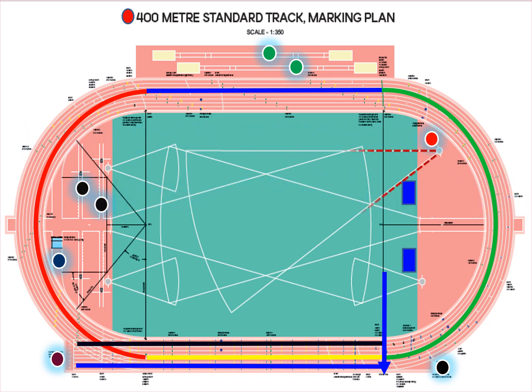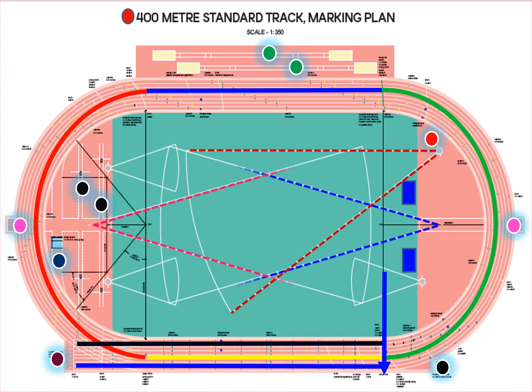One discus and hammer throw compound facility with throwing circle and landing sector. Two javelin throw facilities with runway and landing sector. And three shot put facilities with throwing circle and landing sector.